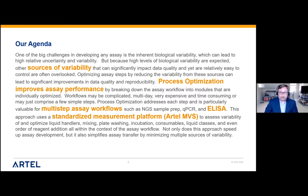Our agenda is really going to be talking about sources of assay variability — not just the standard sources. We're going to talk about all-encompassing sources of variability and tie that together with this idea of process optimization. When we think about the sources of variability and how to approach it from a standardized approach, we'll be able to see how we can improve assay performance. I'd also like to talk about where to use process optimization.